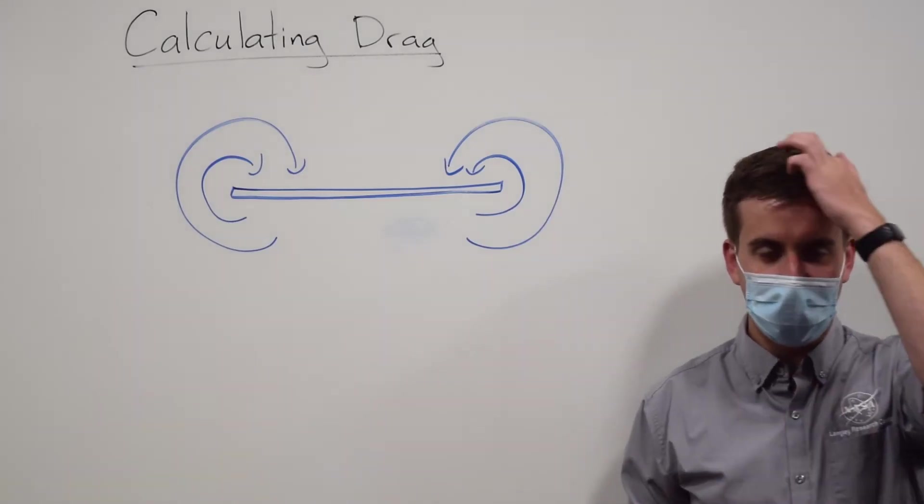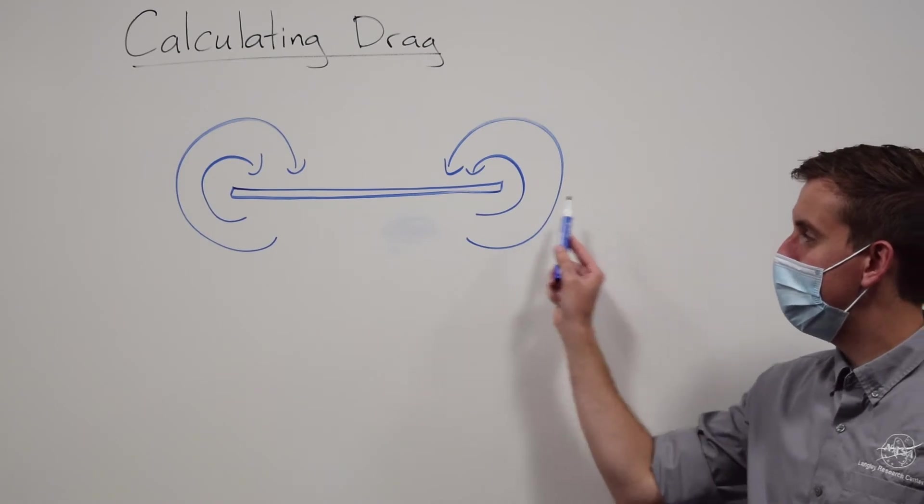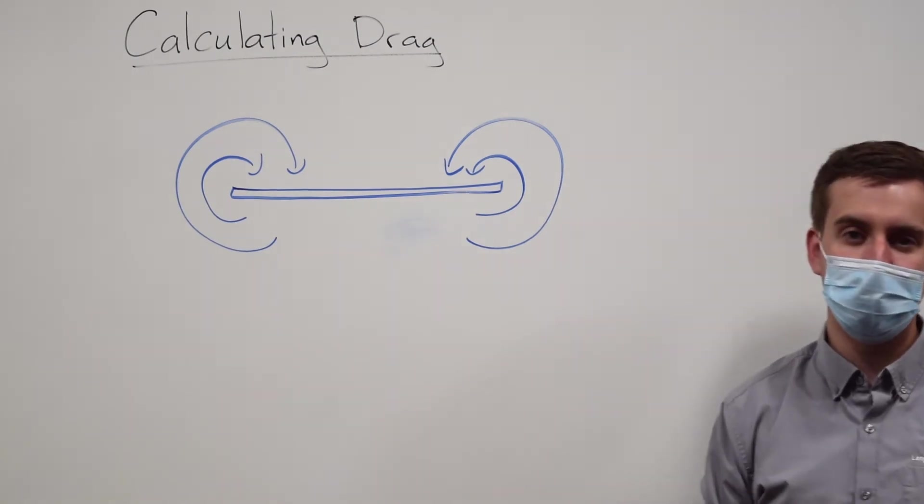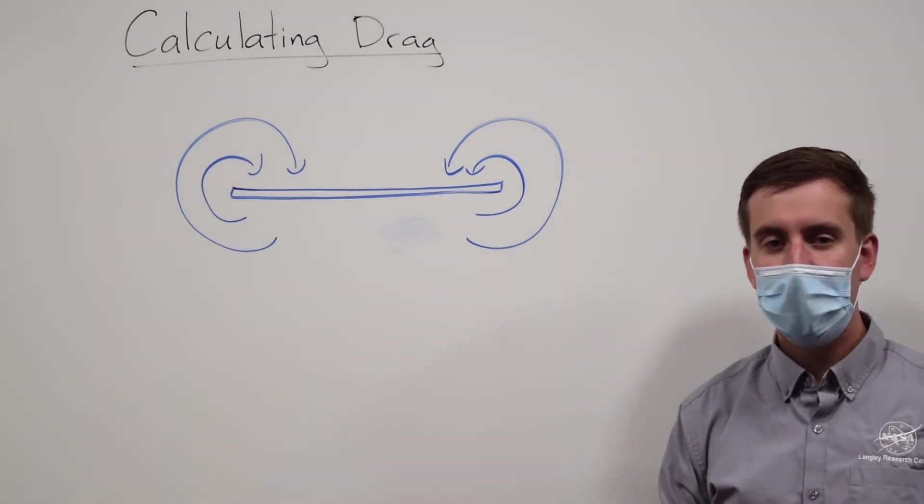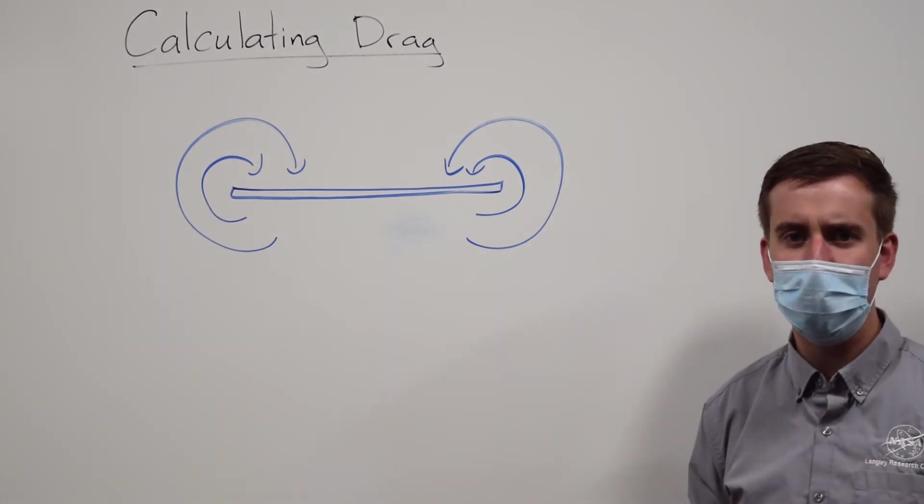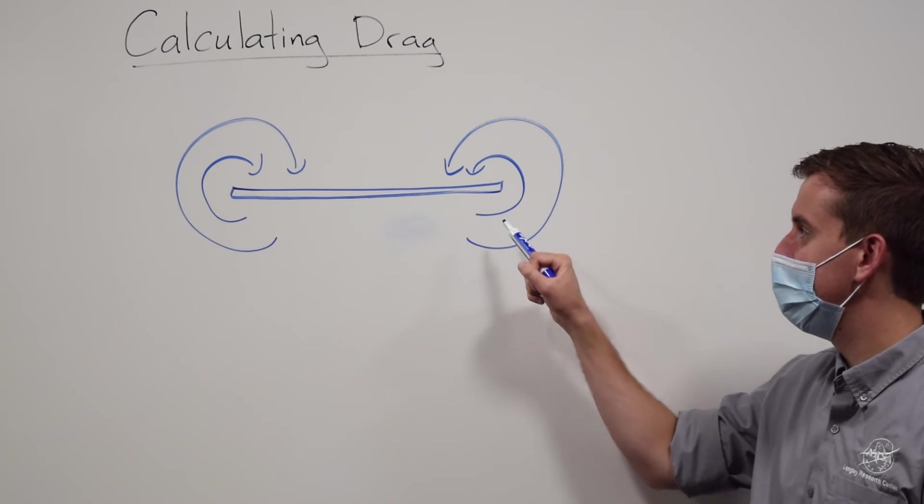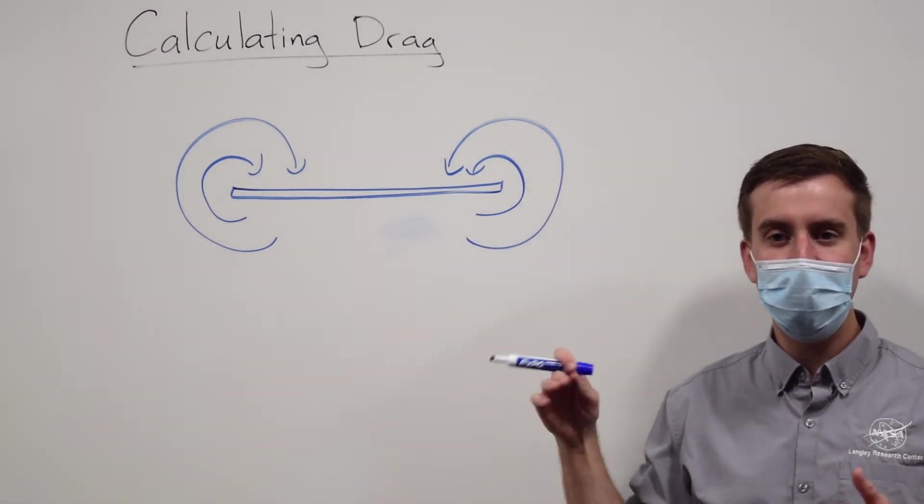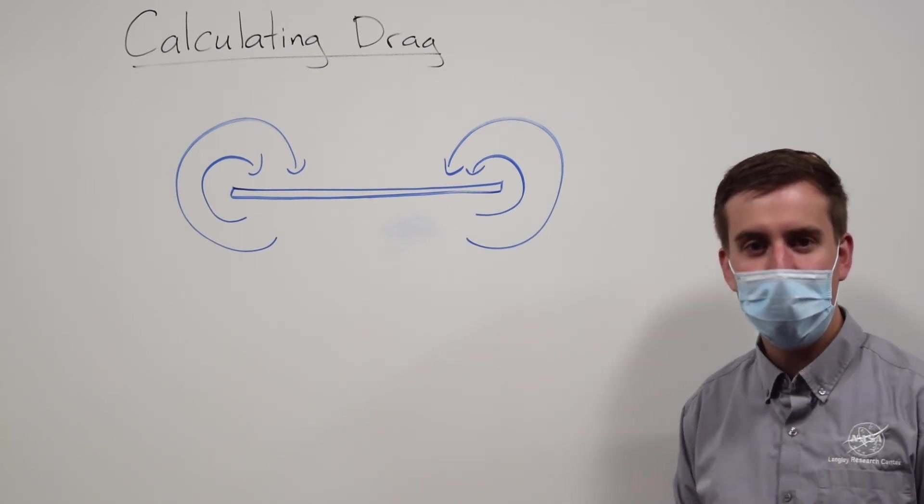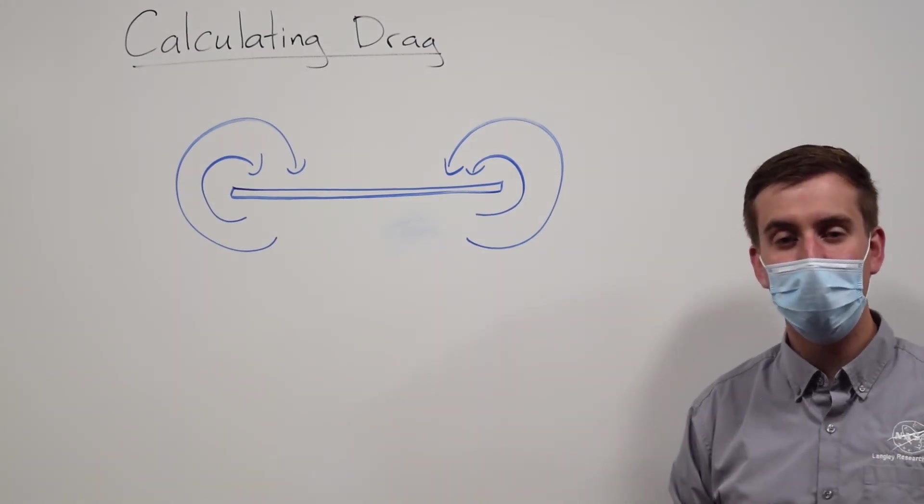Now if we want to calculate the induced drag, there are two ways that both will get you the same answer. One way is if this is the back of an airplane, we're looking at the back of the wing, we get these trailing wing tip vortices, which we talked about in the beginner video. What we can do is we can calculate the energy left behind in this swirliness of the air. And if we do that, we can calculate the total energy or the total momentum left behind, and then we can use that to calculate the total drag on the airplane.